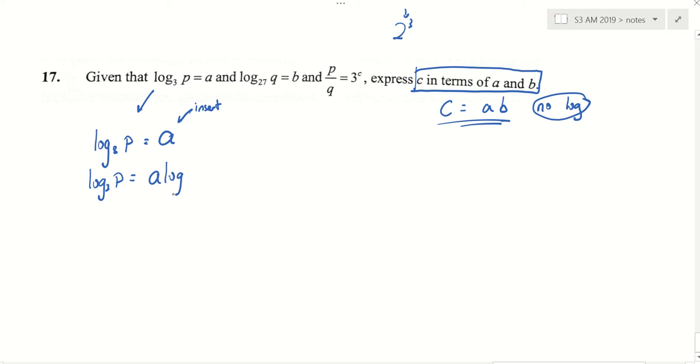A log 3 3. Then the a will go up. So log 3 p is equal to log 3 3 to the power of a.